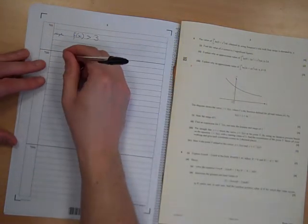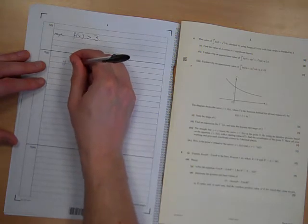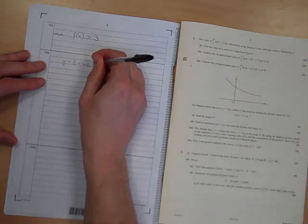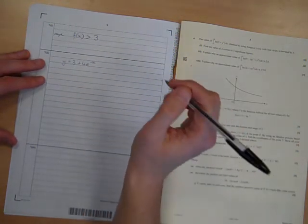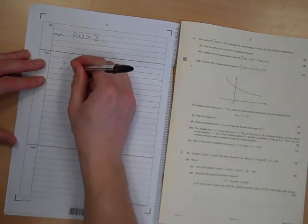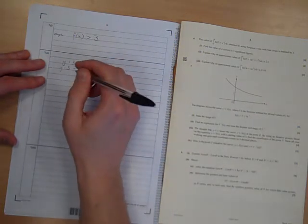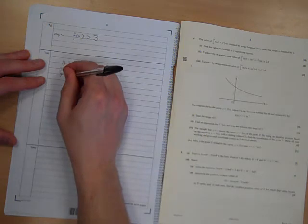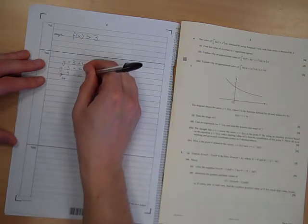Now, the inverse of this, what we do is we set Y as being that, and we need to rearrange this function to get x in terms of y. So y minus 3 is 4e to the minus x. y minus 3 over 4 is e to the minus x.